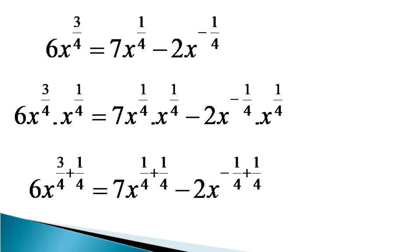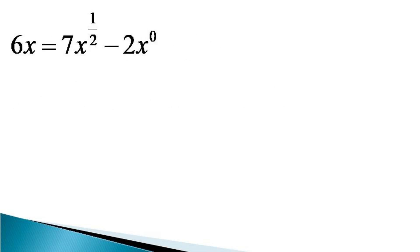After the addition of fractional indices, the equation becomes 6x is equal to 7x raised to the power 1 by 2 minus 2x raised to the power 0.